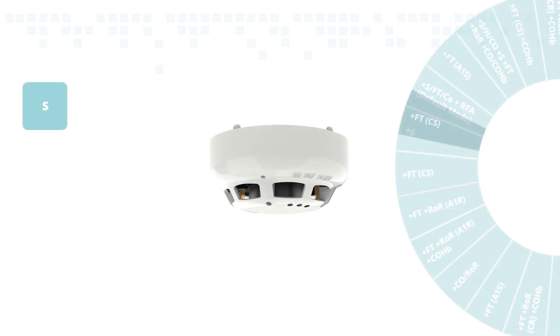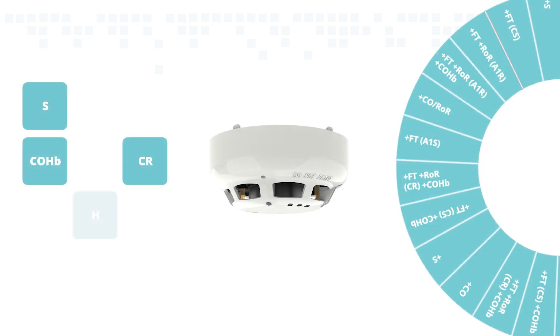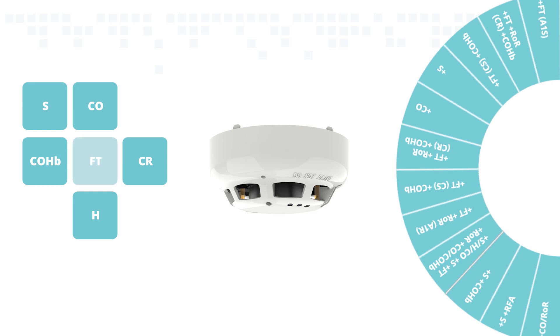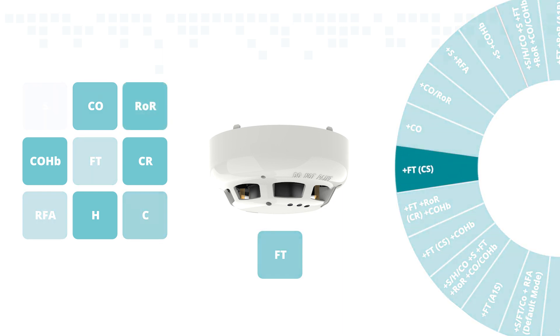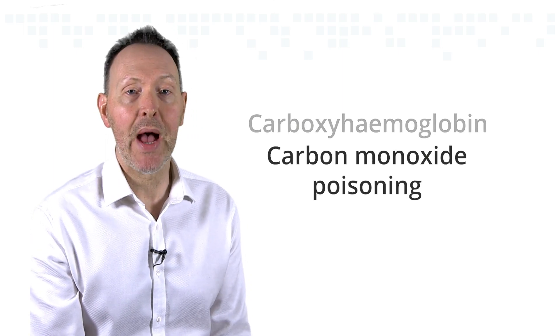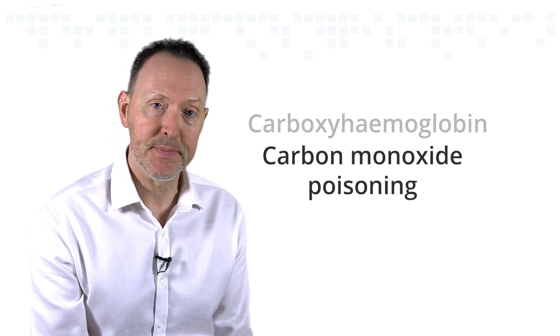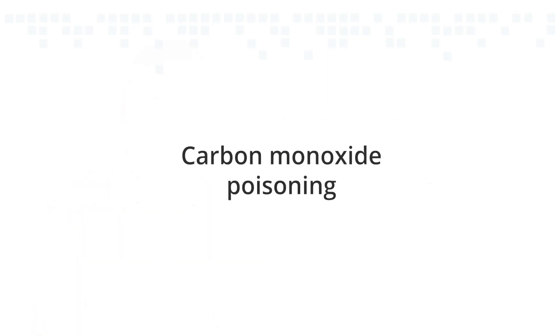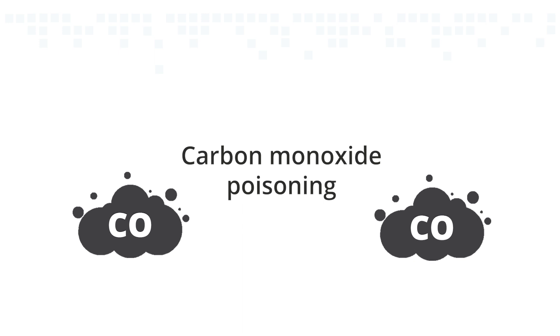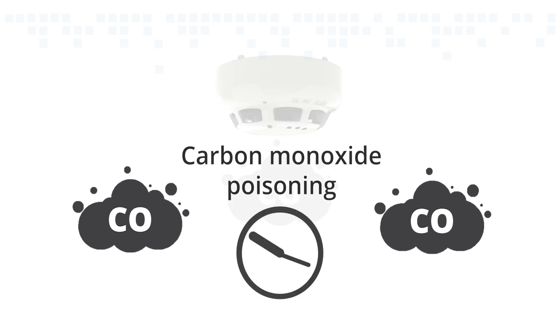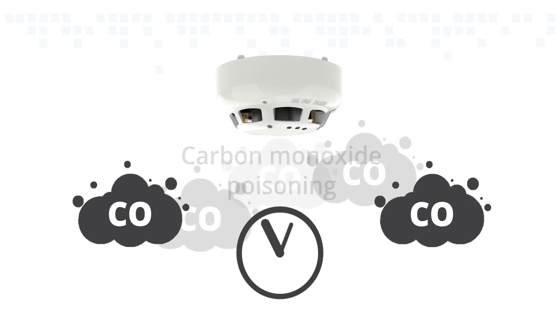The ACD employs several modes where the CO sensing element is used to enhance the sensitivity of the other sensing elements to better detect a real fire over a false alarm. But this sensor can also recognise the threat of carboxyhemoglobin toxic poisoning, commonly referred to as carbon monoxide poisoning. This is usually suffered as the result of either a sudden high exposure to CO or a prolonged exposure over time, so the ACD becomes equipped with modes that monitor for both.